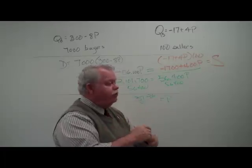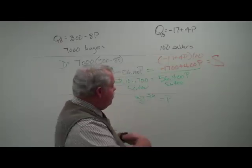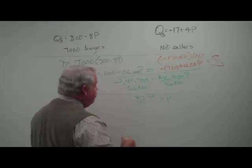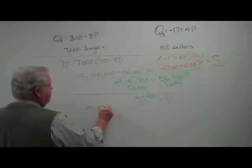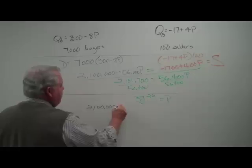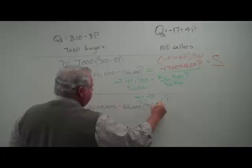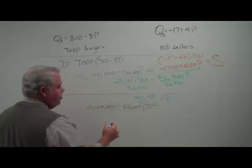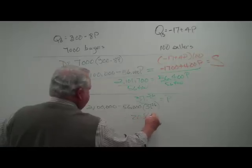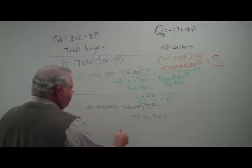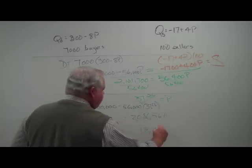There may be a slight difference between the two because the price, $37.26, is rounded off. But when we plug in $37.26, we wind up with 2,100,000 minus 56,000 times the price, $37.26. When we do that calculation out, this becomes minus 2,086,560. When we net them against each other, we get a quantity of 13,440.